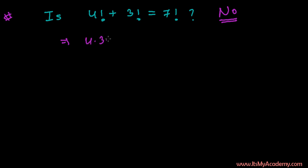4 factorial is like 4 times 3 times 2 times 1 and 3 factorial is like 3 times 2 times 1 and 7 factorial is like 7 times 6 times 5 times 4 times 3 times 2 times 1. By the way, you might have cancelled the 3 factorials everywhere, but I'm not going to do that this time.